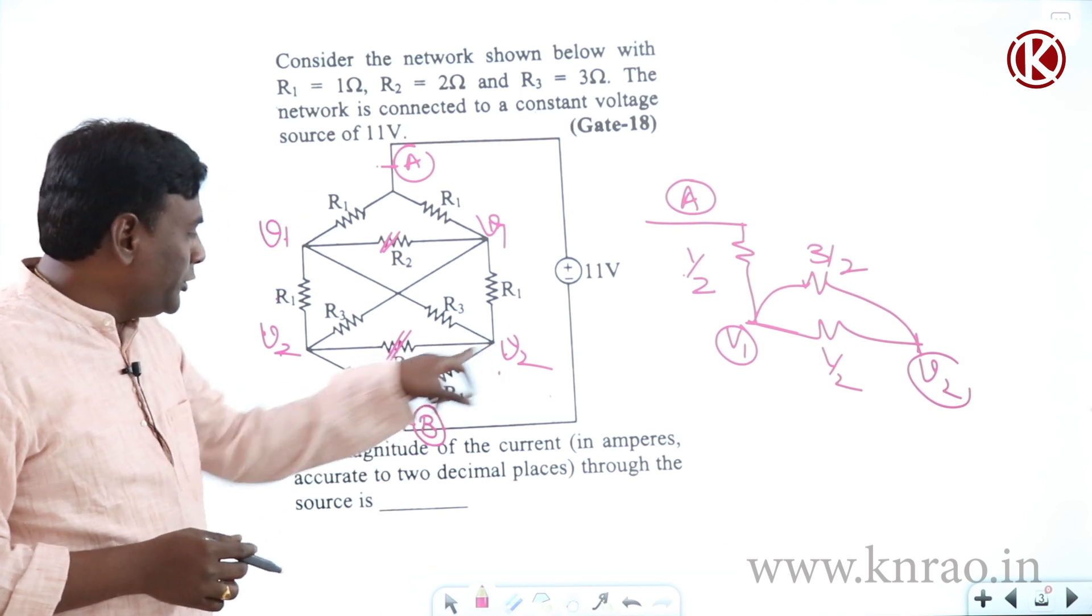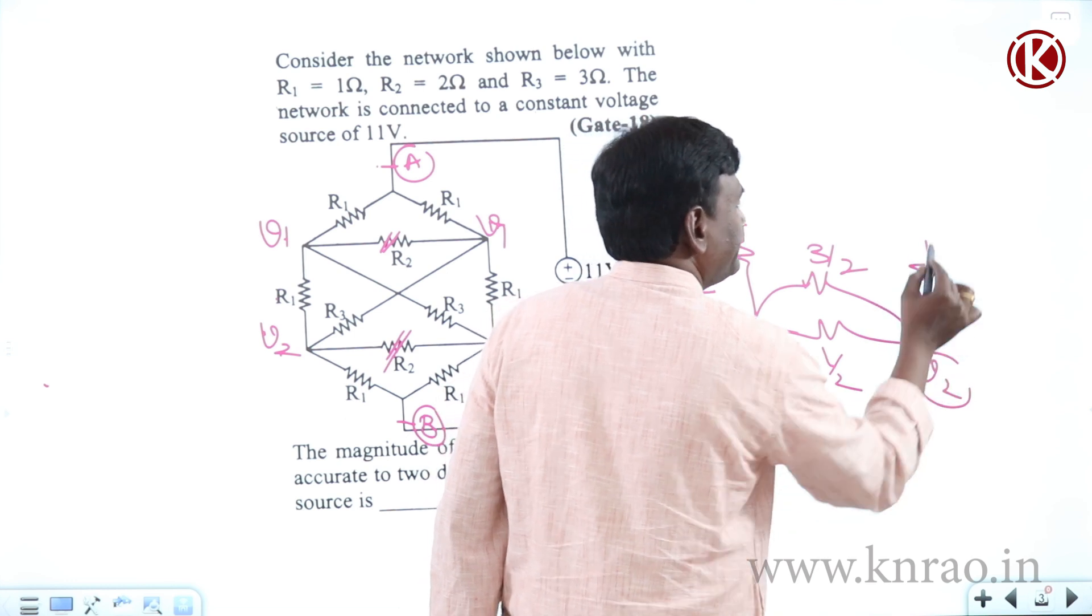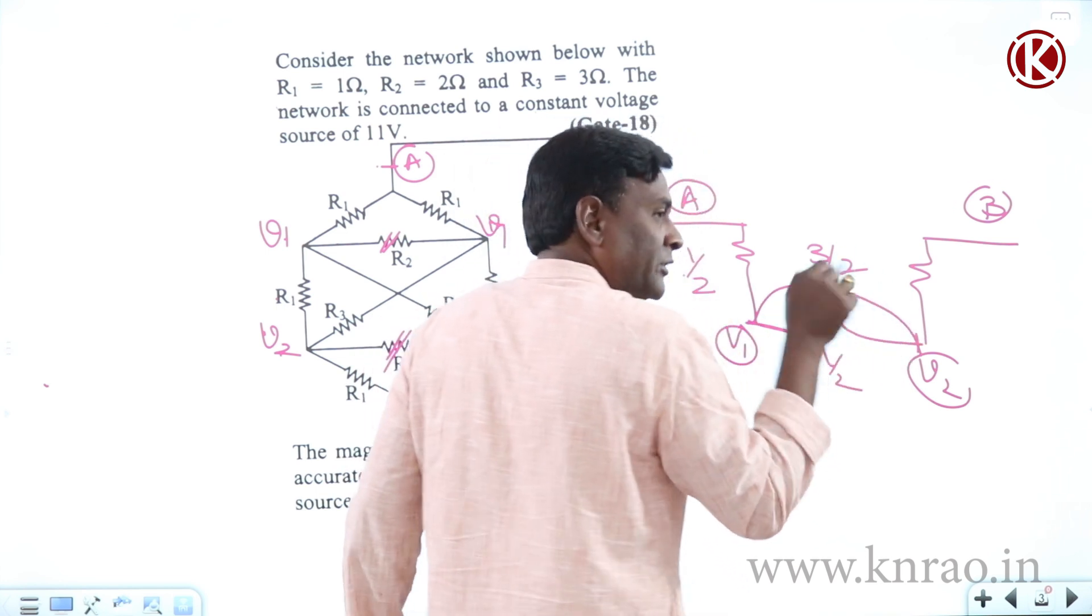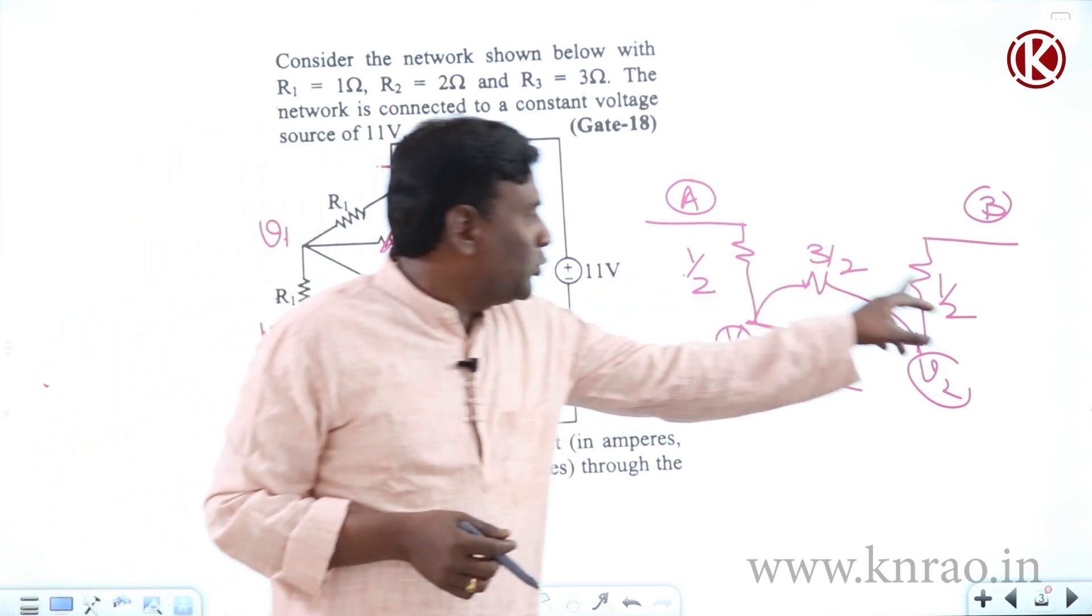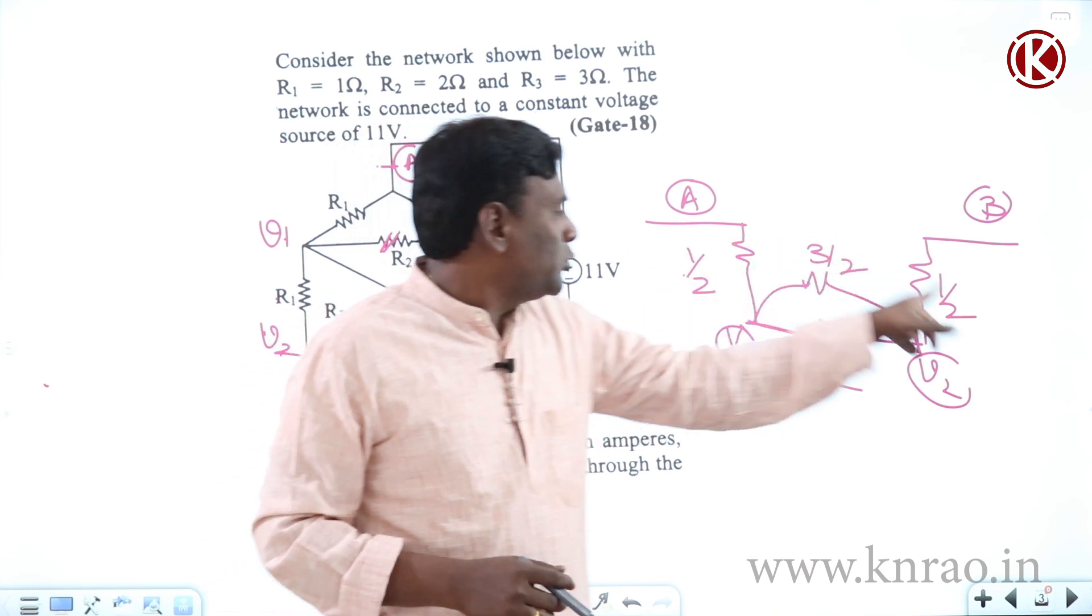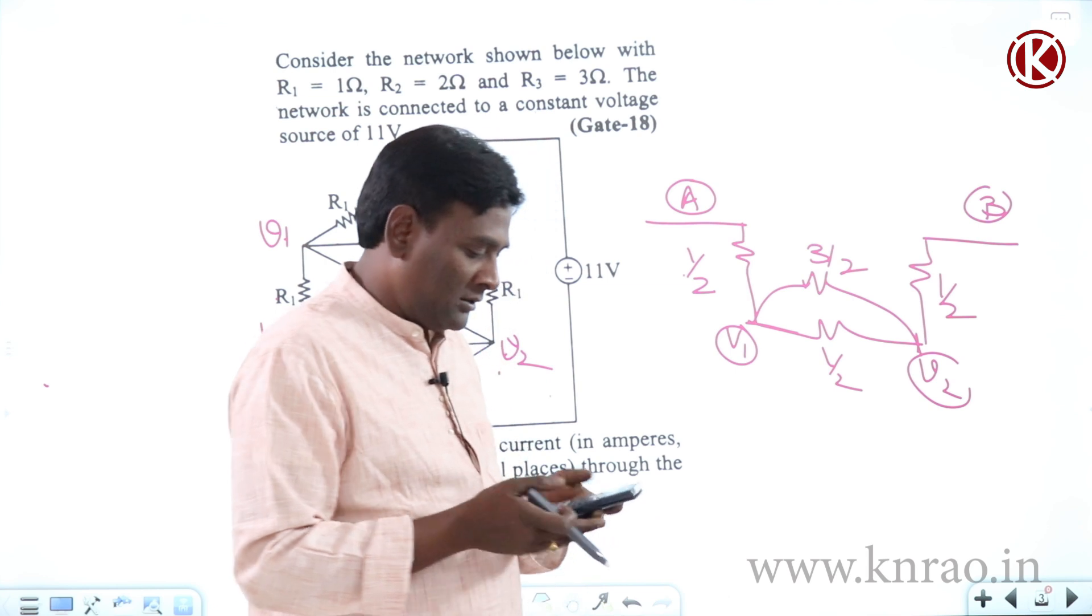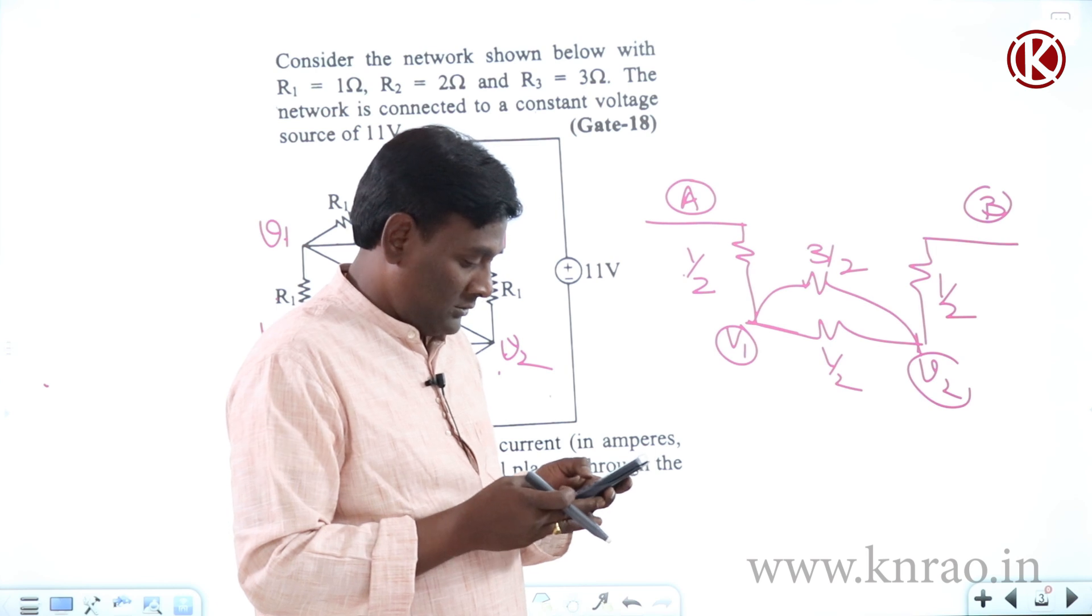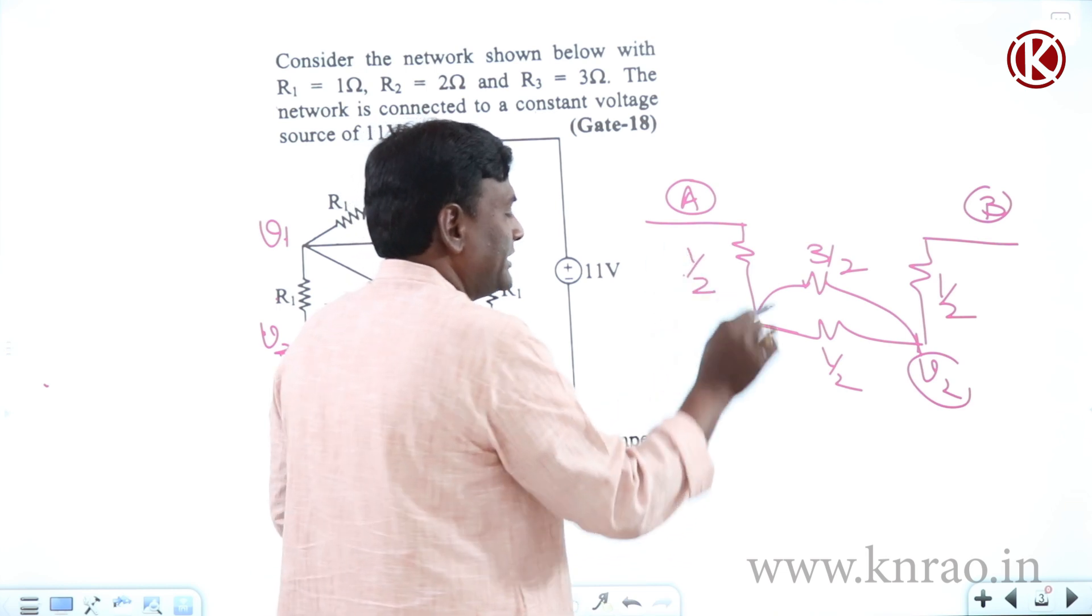And V2 to B, R1 is there. V2 to B R1 is there, so V2 to B, this is going to be B. R1 is 1 ohm, so 1 connected in parallel with 1 ohm only, so this is going to be 1 by 2. Problem solved. So 1 by 2, across A and B we are supposed to find the equivalent resistance. 1 by 2, 1 by 2, and 3 by 2 and 1 by 2 connected in parallel. So 1.5 inverse plus 0.5 inverse equals 0.375 plus 1, 1.375 is the equivalent resistance.